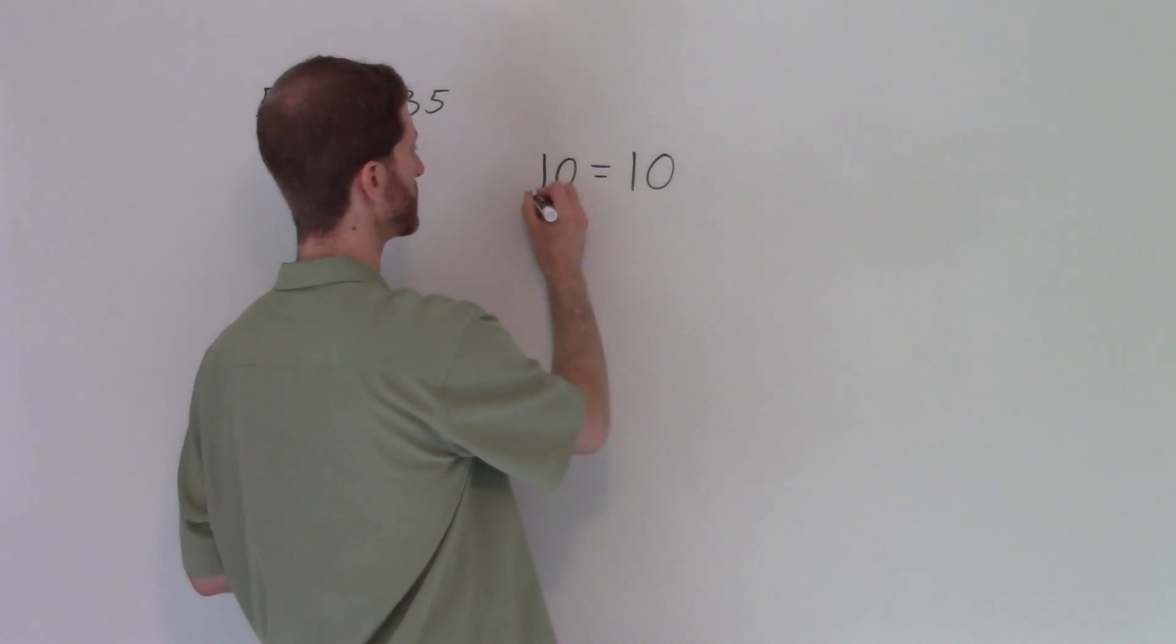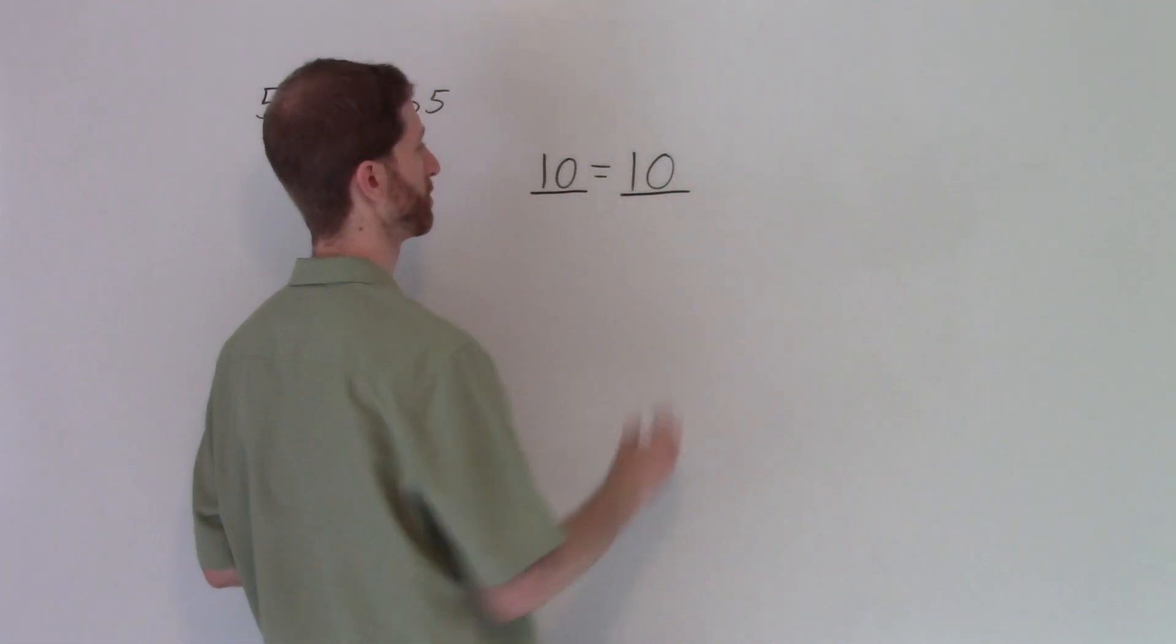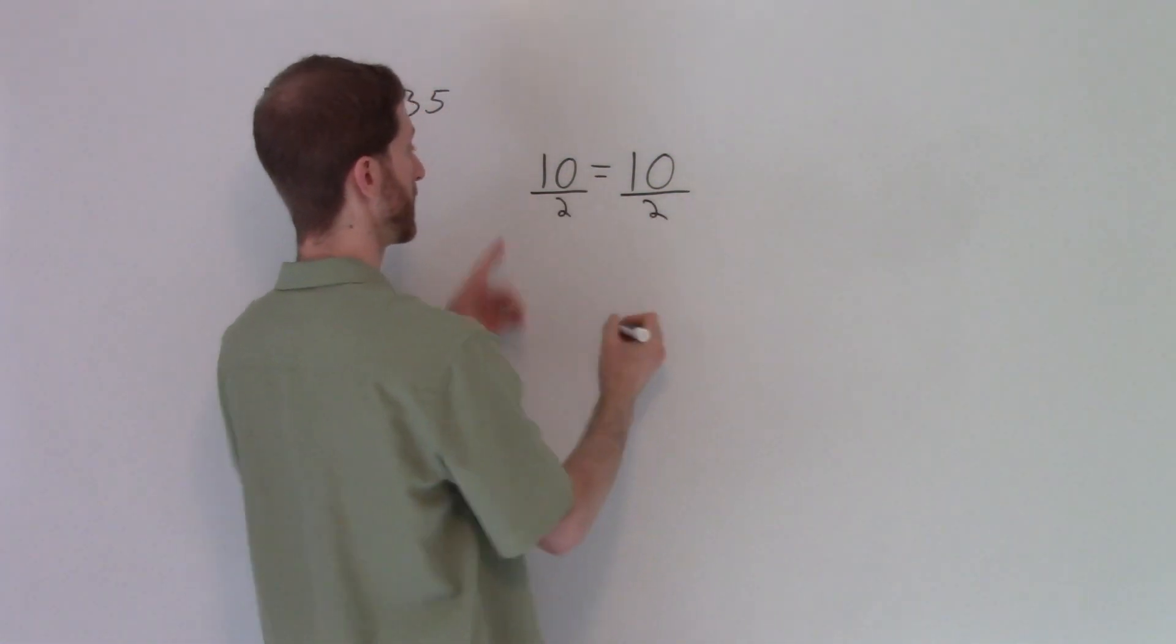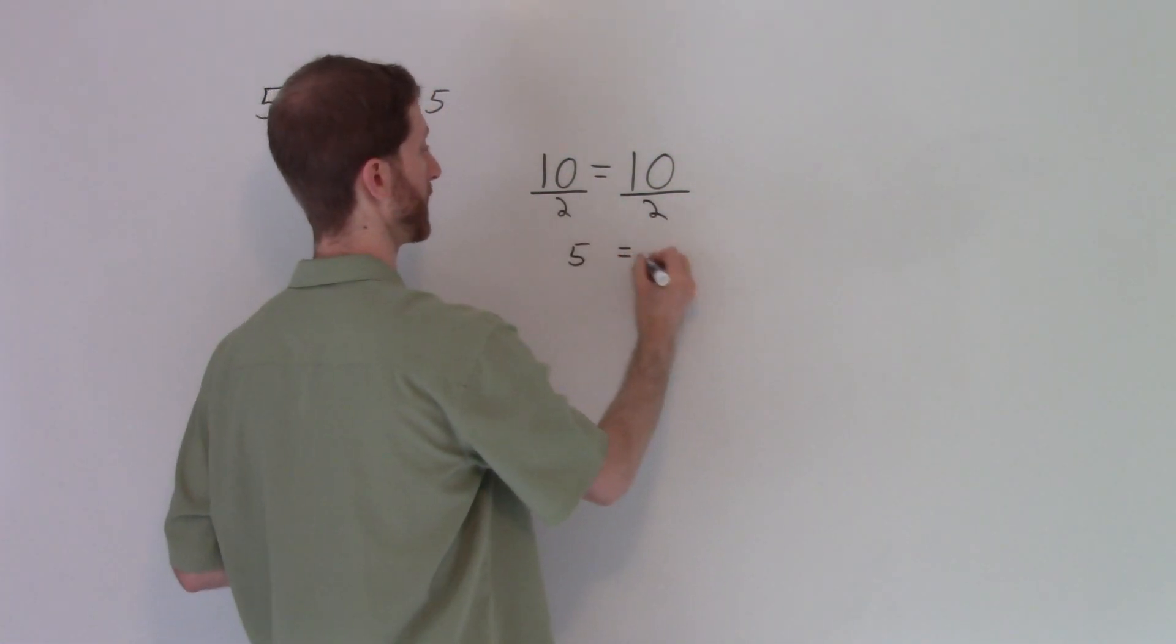Well, if I divide both sides, and I like to divide using fraction bar notation, let's say do we divide both sides by two? 10 divided by two is going to be five, and then 10 divided by two is five.